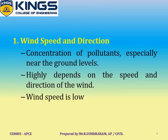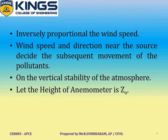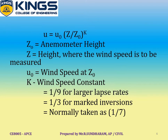In plain terrain, the wind speed and direction near the source decide the subsequent movement of the pollutant. But in hilly terrains, hills may deflect the air flow either horizontally or vertically or both, and the quantity of deflection depends on the vertical stability of the atmosphere. Wind speed can be measured by using an anemometer at height z0. By measuring wind speed u0 at anemometer height z0, the wind speed u can be calculated at any other height z using the formula: u = u0 × (z/z0)^k.